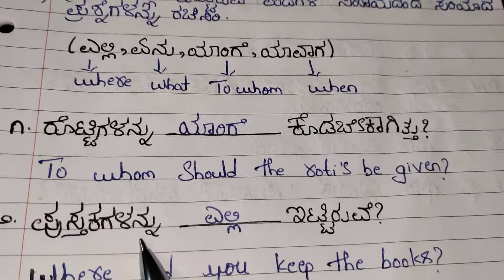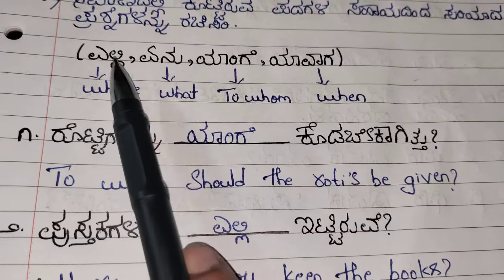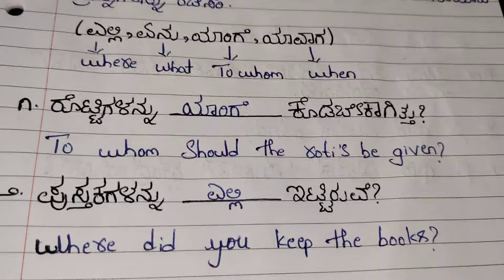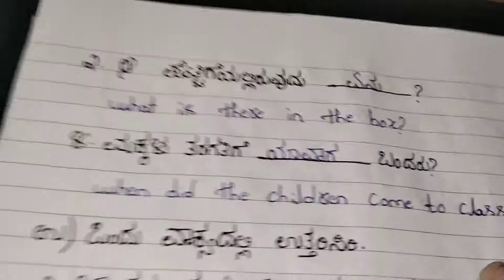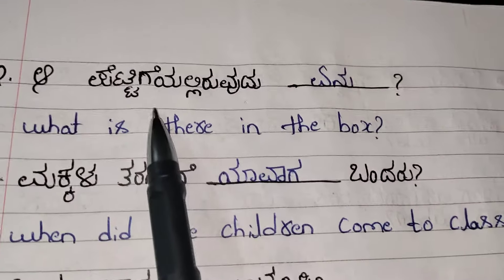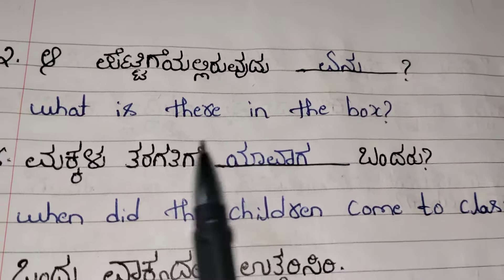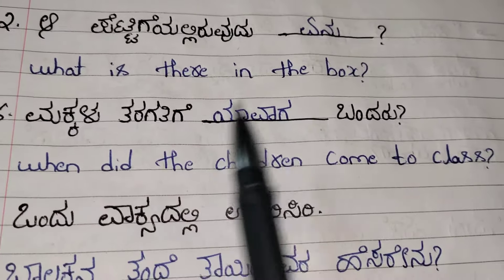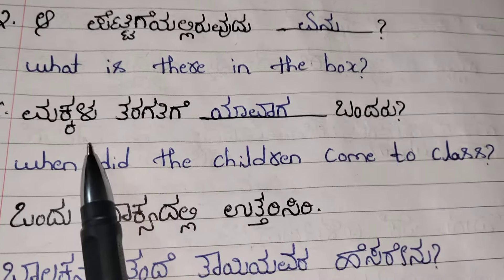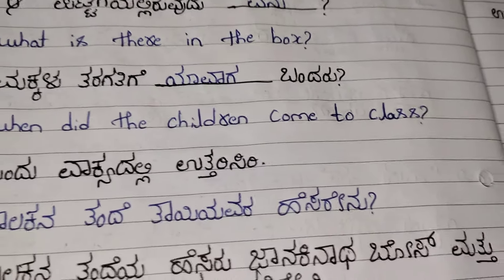Second one: Pustakagalannu dash itttiruwe. You need to choose the option Yalli. Pustakagalannu Yalli itttiruwe — that means where did you keep the books? Third one: A pettigalannu Yalli itttiruwe — what is there in the box? Fourth one: Makkalu taragatigay dash bandaru. Makkalu taragatigay Yavaga bandaru — when did the children come to the class?